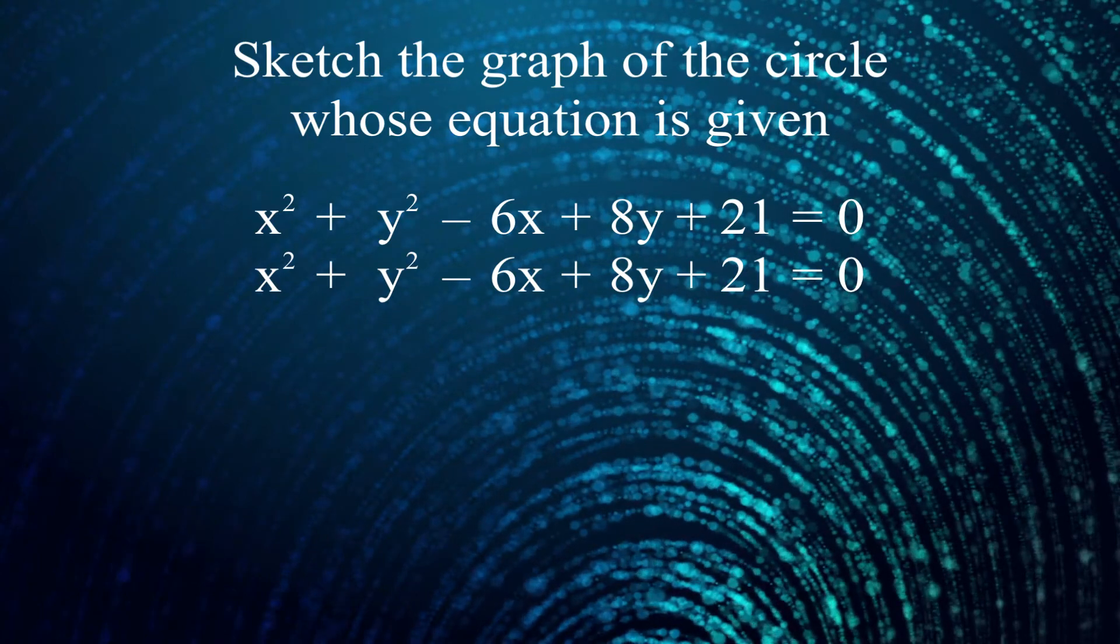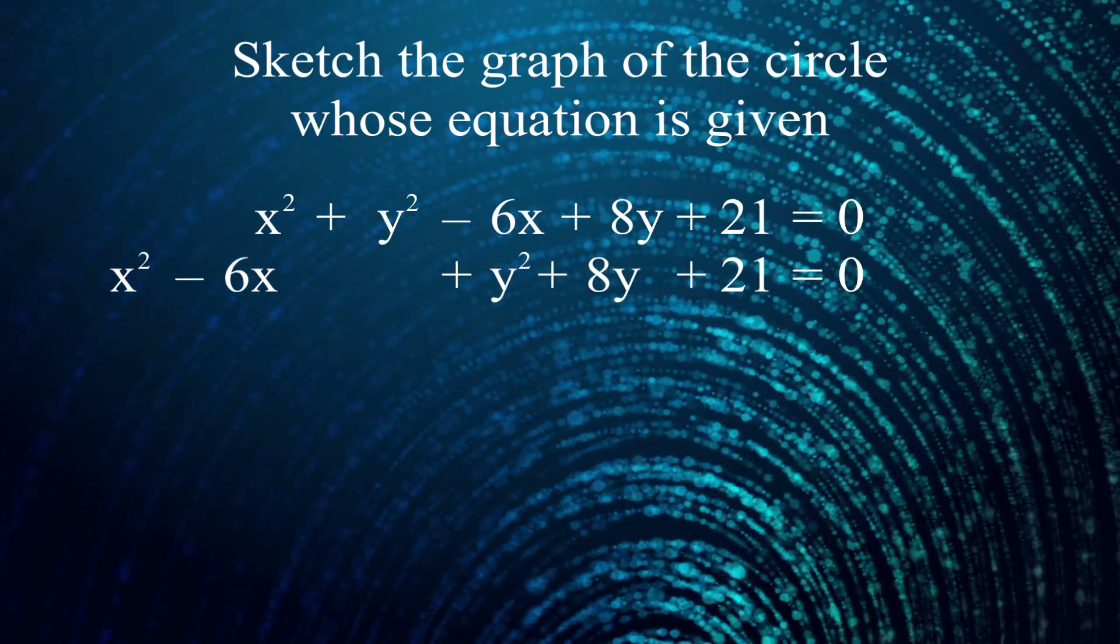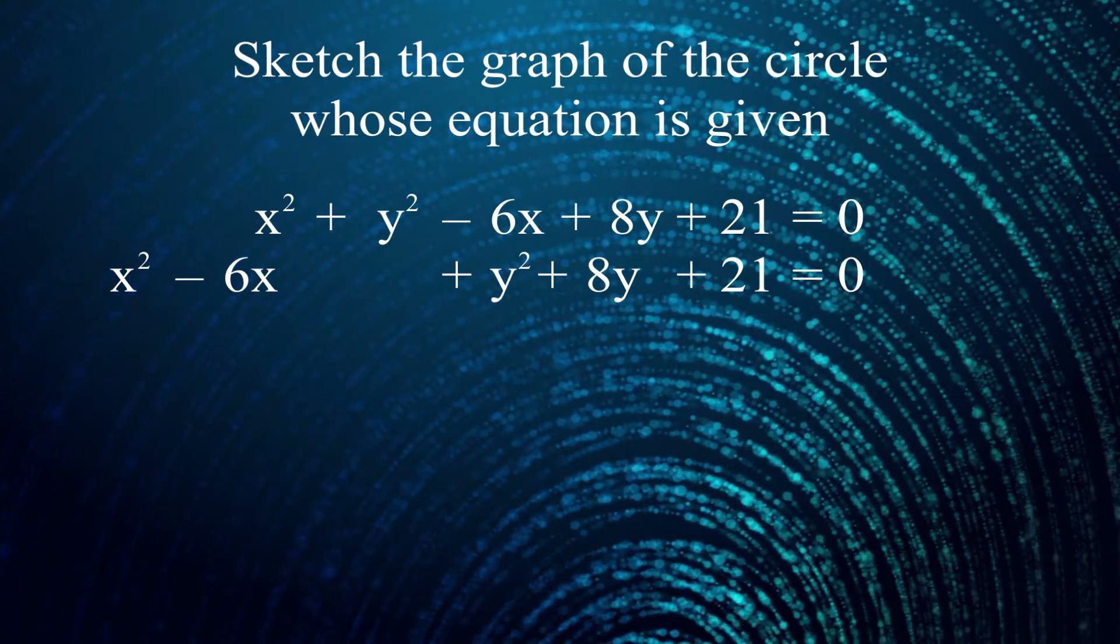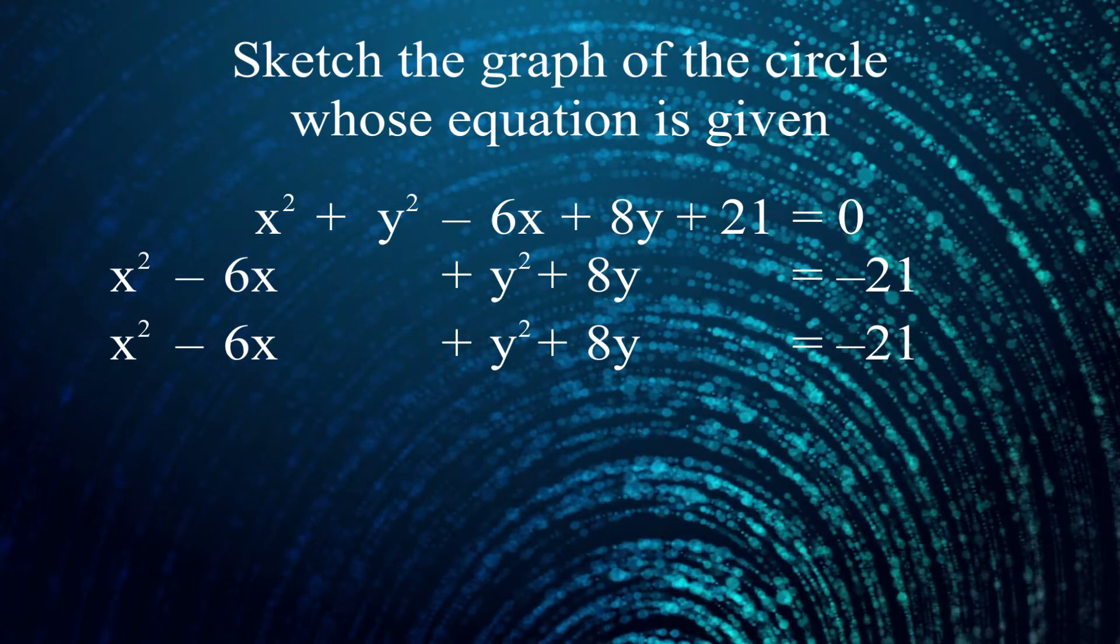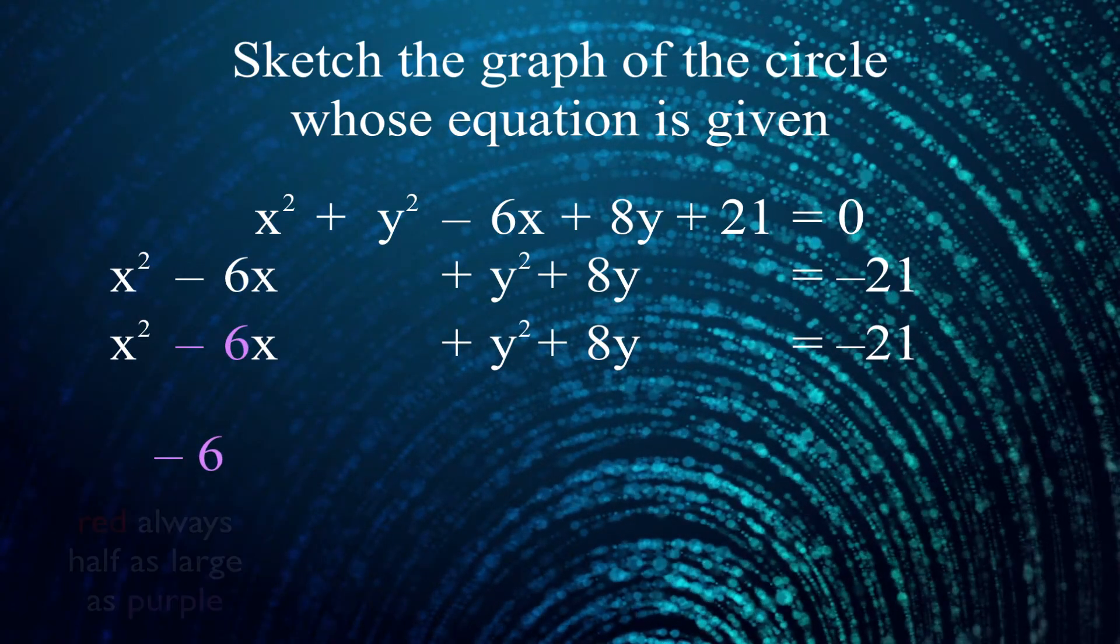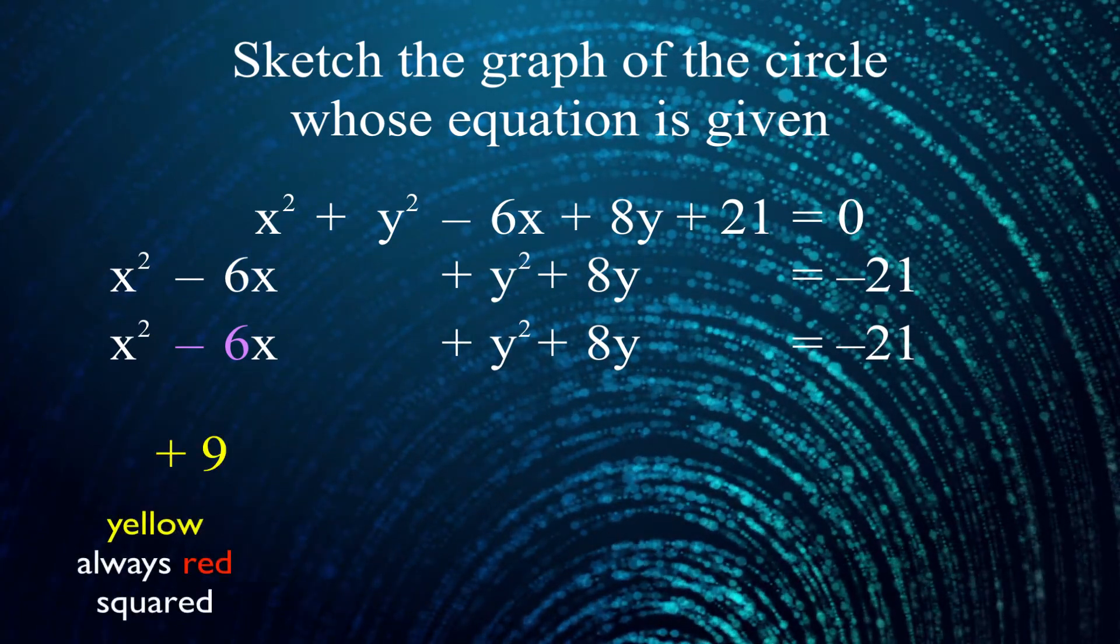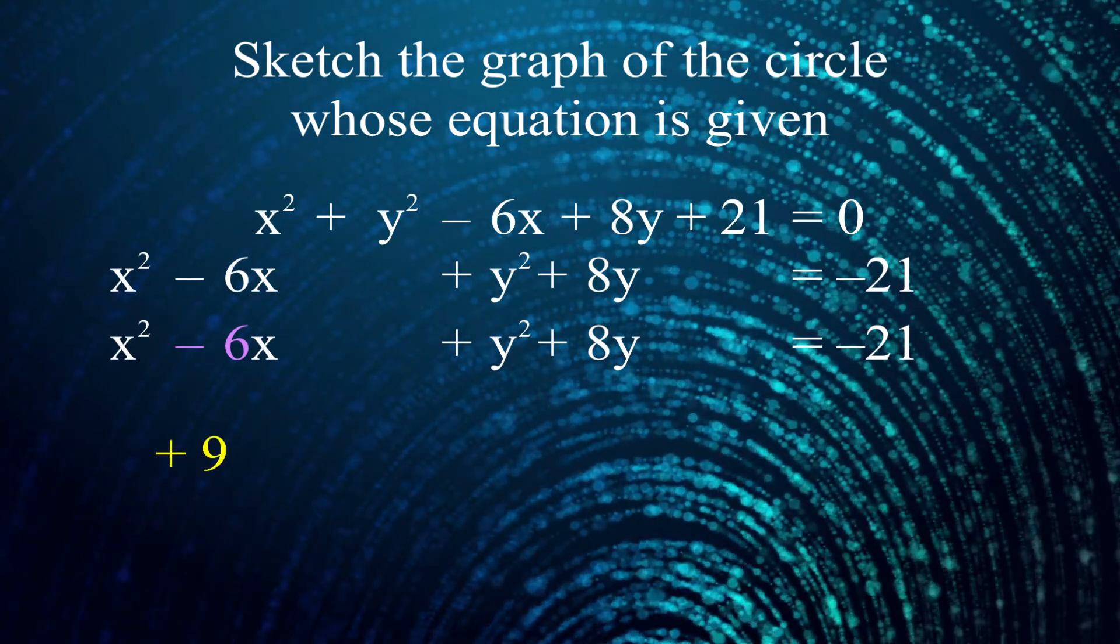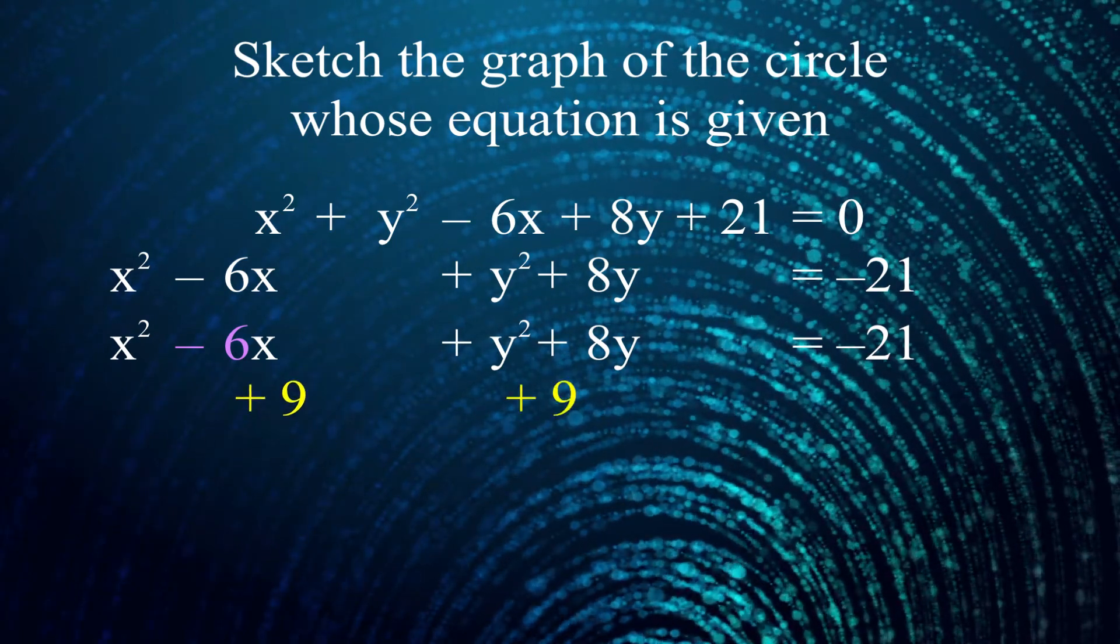The first thing we want to do is group together the terms with an x in them, and the terms with a y in them. As for the constant term, it doesn't really matter. I usually move it to the other side of the equation. Now view it like you have two separate puzzles. The purple number in the first puzzle is negative 6. So the red number, which we don't write, is negative 3, and the yellow number is positive 9. I got x squared minus 6x. I sure wish I had x squared minus 6x plus 9, so I'm going to add 9 to both sides of the equation.